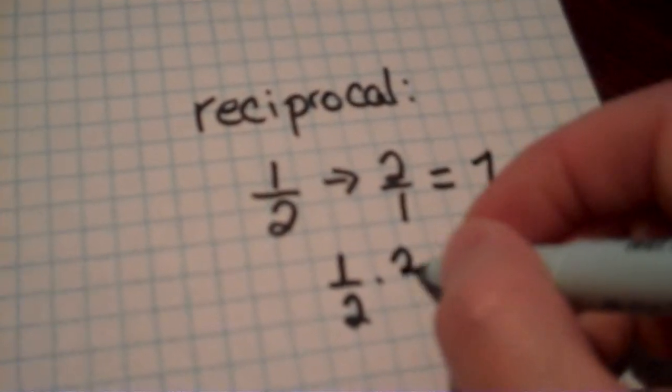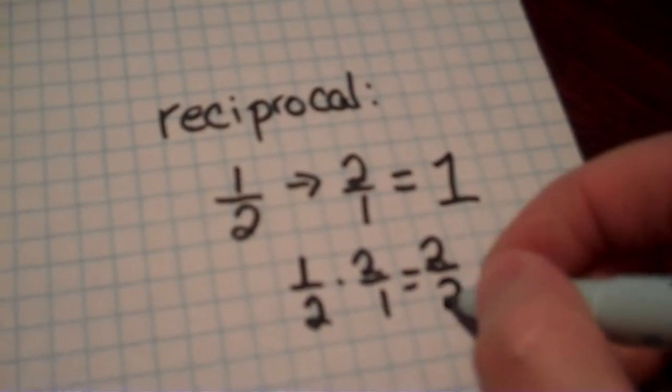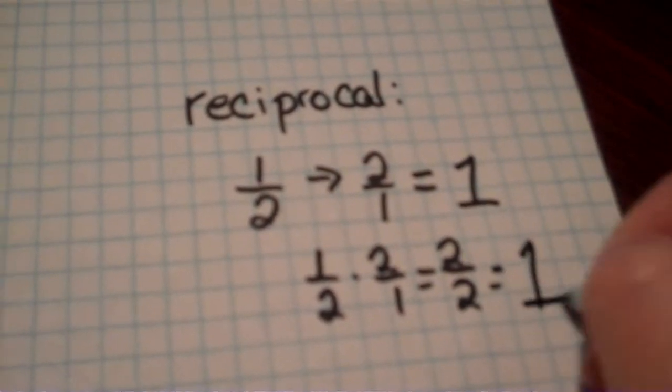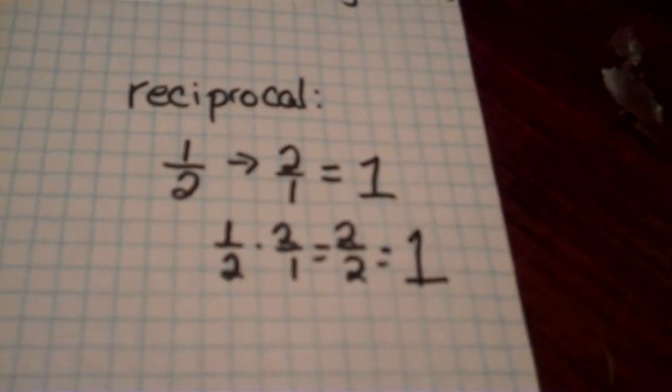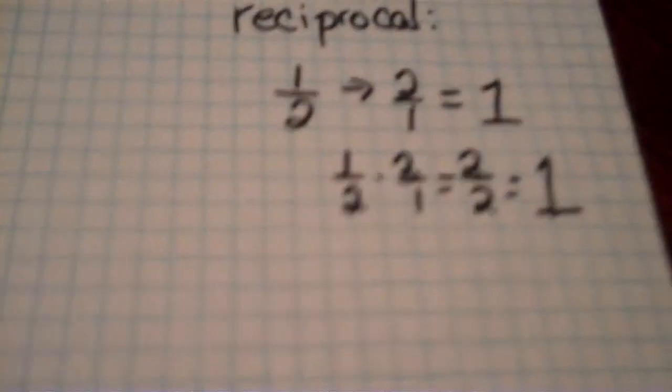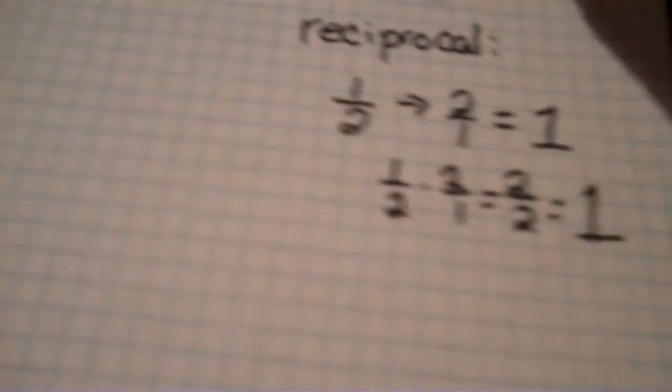And two over two is one. One times two is two, two times one is two, and two divided by two is one. So reciprocal — you flip the second fraction over and it gives you a product of one when you multiply them together. I also talked about KFC. KFC means keep, flip, change — not Kentucky Fried Chicken.